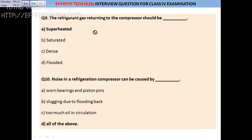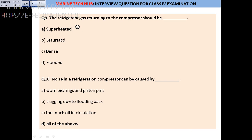Question 9: Refrigerant gas returning to the compressor should be superheated. When gas is coming from the evaporator to the compressor, it should be superheated and must not carry any liquid. If it is superheated, no damage is done to the compressor. The answer is: it should be superheated.